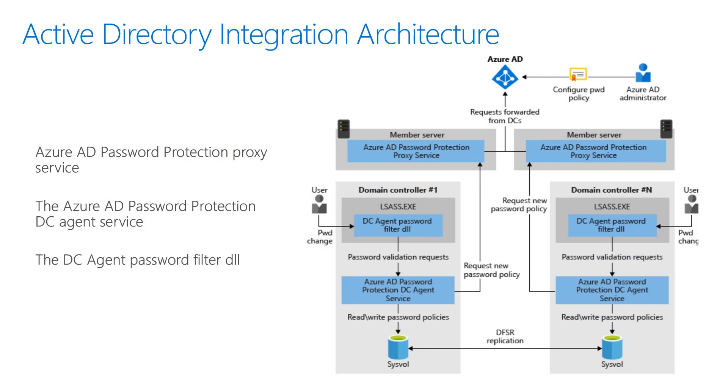When users come in and try to change their password, the password filter DLL of the DC agent receives user password validation requests from the operating system. The password filter DLL is very thin and runs inside a security-critical process in Windows. It forwards them to the DC agent service running locally on the DC, which then does the validation. Whenever an Azure AD password protection policy is downloaded, that policy is specific to a tenant.